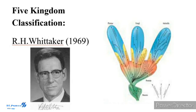Five-Kingdom classification: R.H. Whittaker, an American taxonomist, proposed the five-kingdom classification in the year 1969. The kingdoms include Monera, Protista, Fungi, Plantae, and Animalia. The criteria adopted for the classification include cell structure, thallus organization, mode of nutrition, reproduction, and phylogenetic relationships.